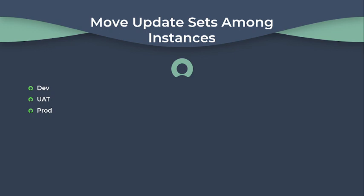Then the next is moving update sets among instances. Every organization must have three instances: dev, UAT, and prod. Dev means development, UAT means user acceptance testing, and the last is production — the live instance. When a developer gets a requirement, they start working on it in the dev instance. When they complete the requirement, they move their update set into UAT. In UAT, the end client tests whether their requirement is fulfilled or not. If the requirement is fulfilled, then after confirmation from the client, the update set is moved into the live production instance. In this way, update sets are moved from the lower instance to the higher instance.